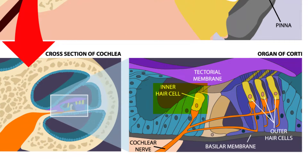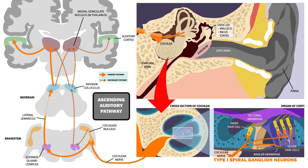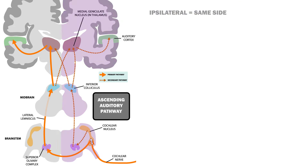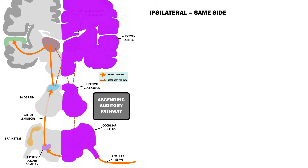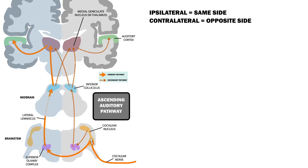Inner hair cells in the organ of Corti are connected to type 1 spiral ganglion neurons, whose axons represent 95% of the cochlear nerve. Firstly, signals travel along the cochlear nerve to the cochlear nuclei in the brainstem on the ipsilateral side. Ipsilateral means same side, and contralateral means opposite side.